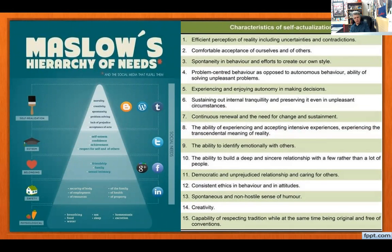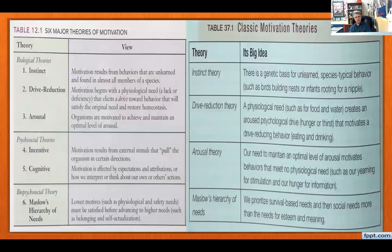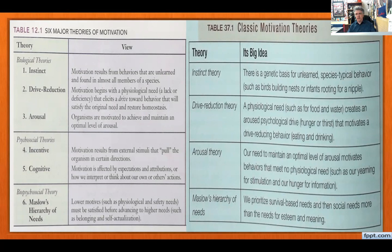That wraps up Unit 1 Lecture 6 for on-level Psychology and Unit 4 Lecture 8 for AP dual credit. The next lecture on motivation will cover hunger, locus of control, and related topics.